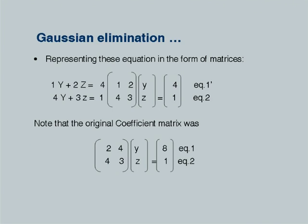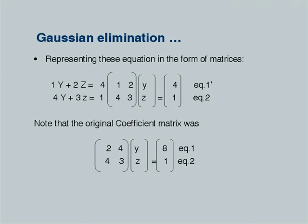If we represent these equations in matrix form, equation 1-dash and equation 2 effectively reduce the matrix to have 1 and 2 in the first row. Note that the original coefficient matrix was 2, 4, 4, 3. The key point is that we can work entirely with the coefficient matrices without explicitly carrying the variables, and arrive at the same result. So the coefficient matrix 1, 2, 4, 3 with right-hand side 4, 1 represents the same system as 2, 4, 4, 3 with right-hand side 8, 1.